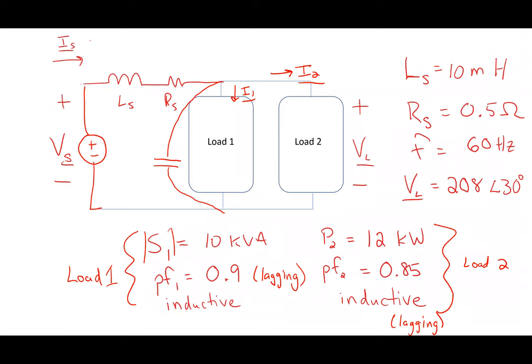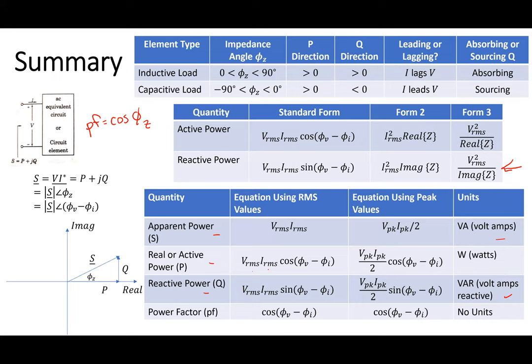The other day we did a problem in single phase. I basically had two loads in parallel, and I gave you the apparent power. One thing that's important: when I write S with a bar like this, this is the vector — this is called complex power. That's not apparent power. Apparent power is the magnitude of that thing. So apparent power is a scalar number; it's the magnitude of that vector.